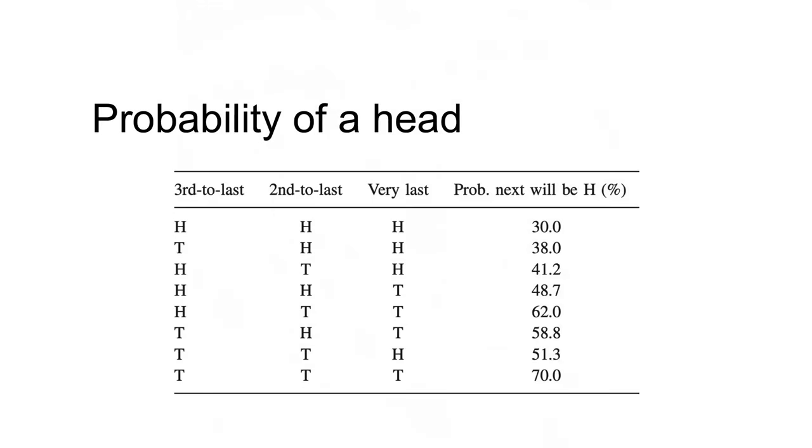Using data from Rapoport and Butterscu, Rabin and Veyanos derived the probability of heads predicted by experimental subjects, given the last three flips being heads or tails. Following a sequence of three heads, they predict heads on the next flip with only 30% probability, but after three tails, they predict heads on the next flip with 70% probability.